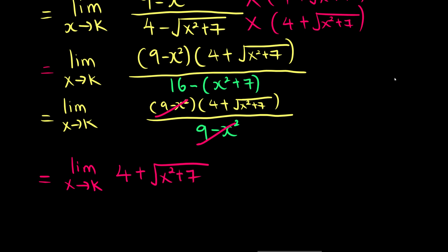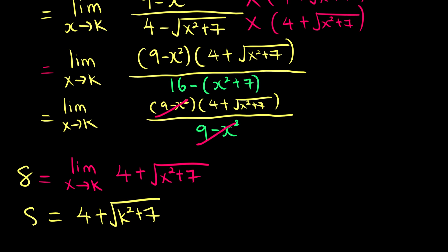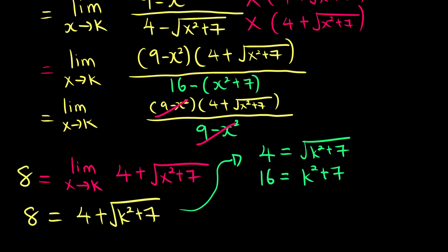Now we apply our condition: the limit equals 8. So we substitute: 4 plus square root of k squared plus 7 equals 8. Rearranging: 8 minus 4 is 4, so square root of k squared plus 7 equals 4. Squaring both sides: 16 equals k squared plus 7. So k squared equals 9, and taking the square root gives k equals positive or negative 3.